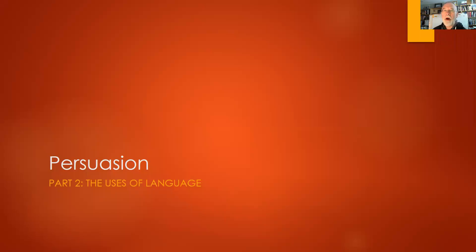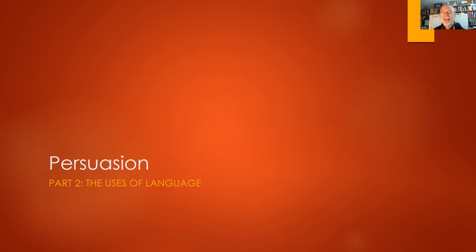Welcome to part two of my series on persuasion. This is one part of my series on critical thinking. The point here is that critical thinking requires that you be aware of how people are trying to persuade you and how to think more carefully about persuasion itself. The last session, I looked at the question of how language functions because persuasion is primarily an aspect of language.